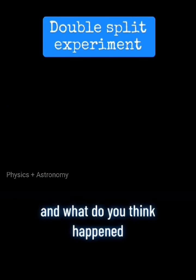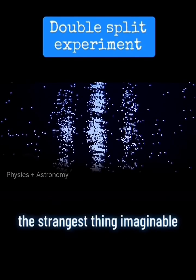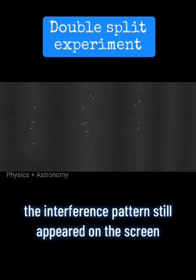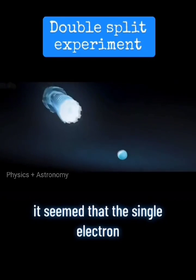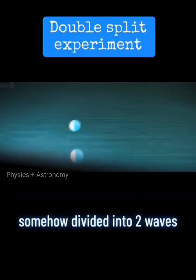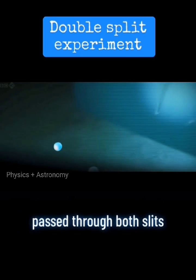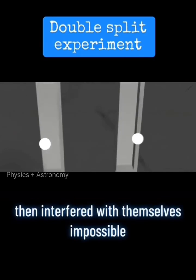And what do you think happened? The strangest thing imaginable. The interference pattern still appeared on the screen. It seemed that the single electron, somehow, divided into two waves, passed through both slits, then interfered with themselves.